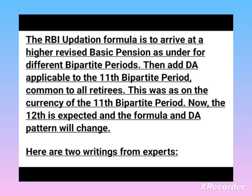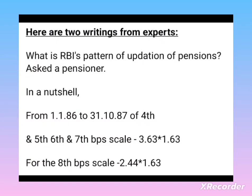Now the 12th bipartite period is expected, and the formula and DA pattern will change. Here are two writings from the experts on what is the RBI pattern of application of pension. In a nutshell, from 1st January 1986 to 31st October 1987, for the 4th, 5th, 6th, and 7th BPS, the factor is 3.63 multiplied by 1.63. For the 8th BPS scale, it is 2.442 into 1.63.